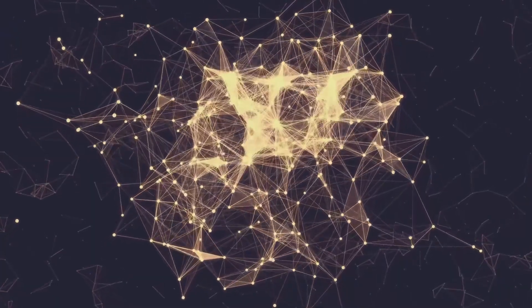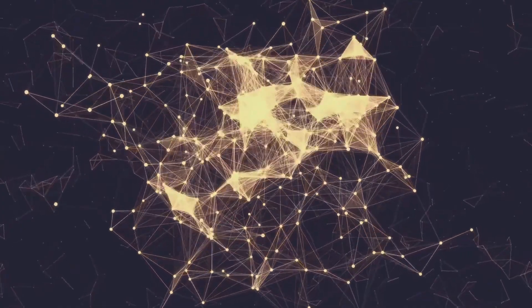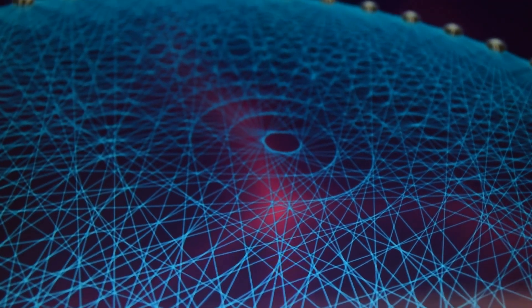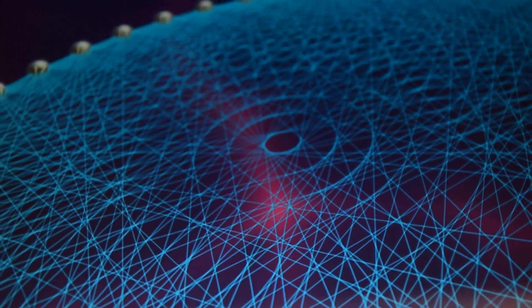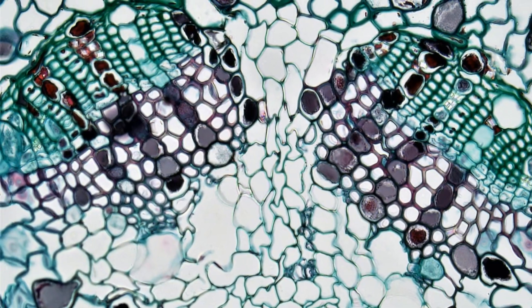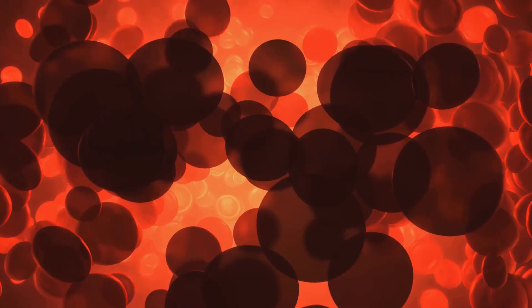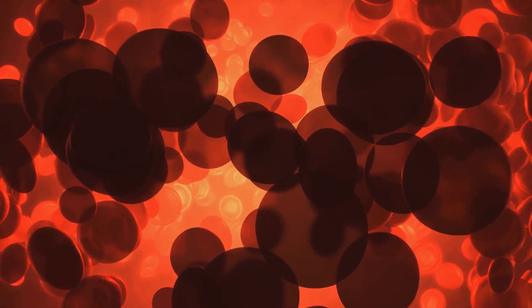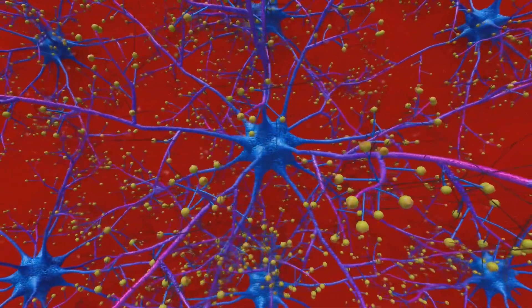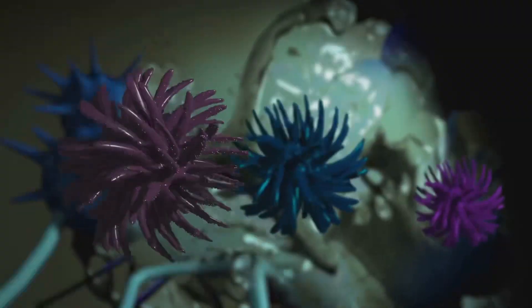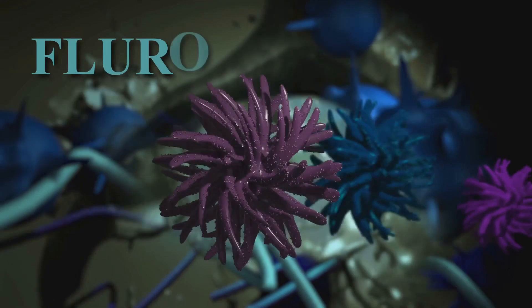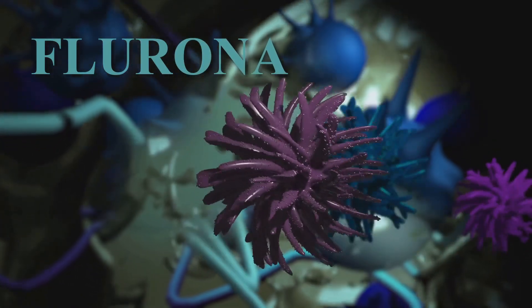The ER is not a monolithic structure. Instead, it's composed of two distinct domains, each with its own unique structure and function: the rough ER and the smooth ER. These two domains are interconnected, but they play distinct roles in the cell. The rough ER gets its name from its appearance under a microscope. Its surface is studded with ribosomes, the protein-making machines of the cell, giving it a characteristic rough appearance. These ribosomes are not permanent residents of the rough ER. They bind to the ER membrane when they are synthesizing proteins that are destined for the secretory pathway, the pathway by which cells produce and release proteins into their surroundings.